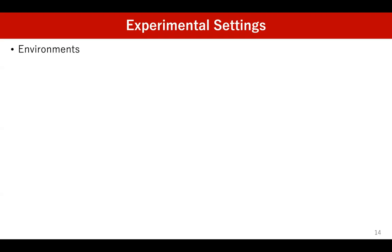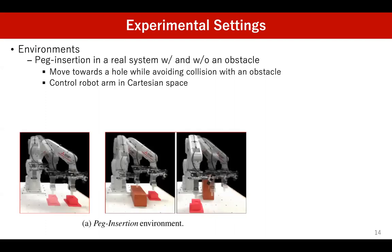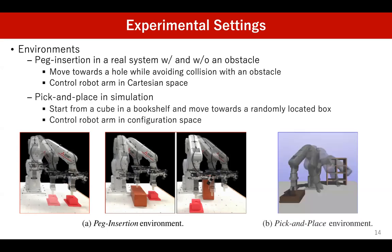We verify our method in a simulated environment as well as real robotic experiments using two environments. The first is a peg insertion environment with a real robot, with and without obstacles, where the agent moves towards a red box with a hole while avoiding obstacles, controlling the robot arm in Cartesian space. The second is a pick-and-place environment in simulation, where the agent starts from a cube on a bookshelf and moves towards a randomly located box in configuration space.